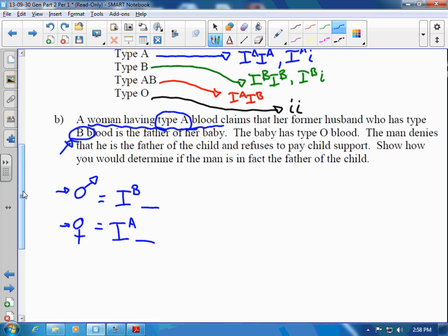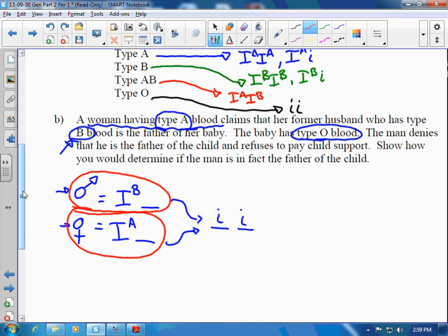She claims that this man is the father of her baby. The baby has blood type O. These two have come together to produce a type O baby. Is it possible for this man and this woman to have this kid? Well, clearly it is, but only if the man and the woman are heterozygous, meaning they both have a little i to donate.